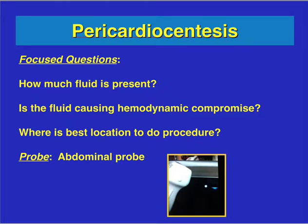For pericardiocentesis, the first things we ask ourselves are: how much fluid is present, is the fluid causing hemodynamic compromise, and where is the best location to do the procedure? The probe we normally use is the abdominal probe, but you can also use the cardiac probe for evaluation. The abdominal probe is easier for needle-directed procedures, which is why it is recommended with abdominal presets.